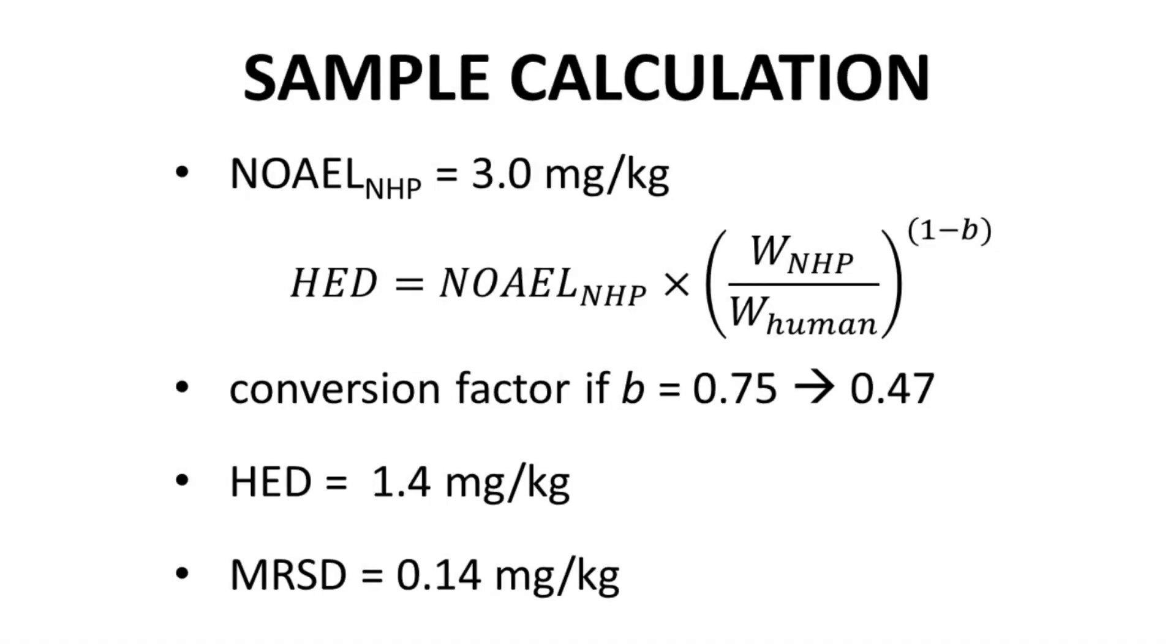Here is a quick sample calculation of MRSD. Let's say we have a compound with a NOAEL of 3 mg per kg in monkeys, non-human primates, NHP. We need to determine the HED with our equation. The entire value of this exponential function can often be looked up in its entirety in tables according to the preclinical species and B value.